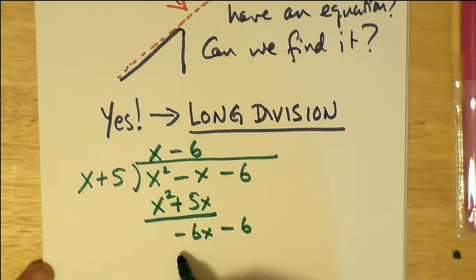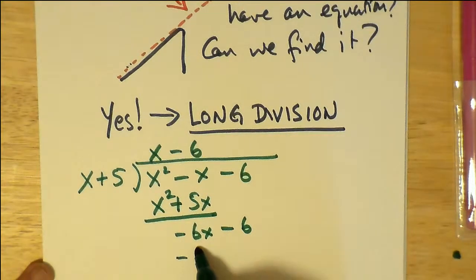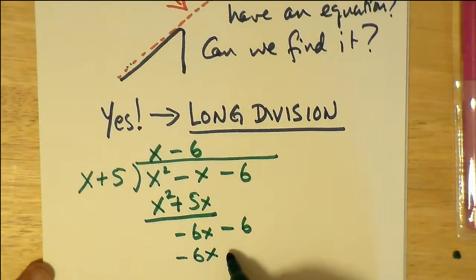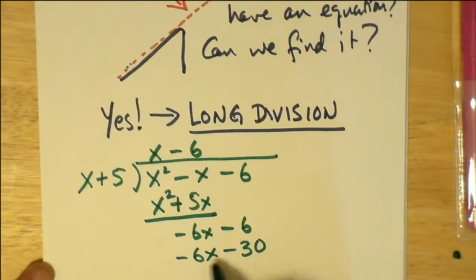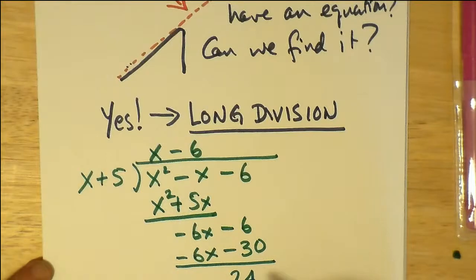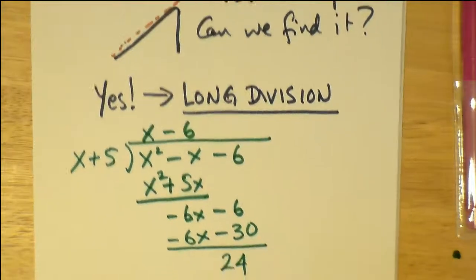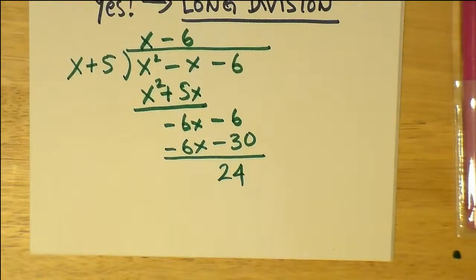6 times x is going to be negative 6x. This takes me a long time to think, probably because I have a cold or something. But negative 6 times 5 is negative 30. When we subtract negative 30, we get a number positive 24. And we can't do anything with it. It's a remainder.